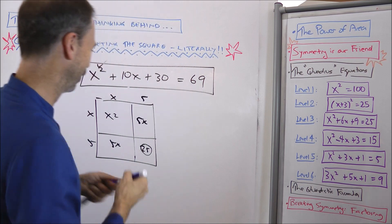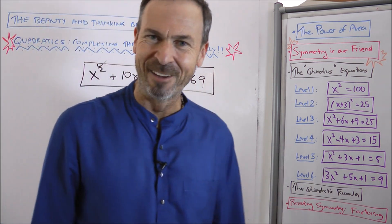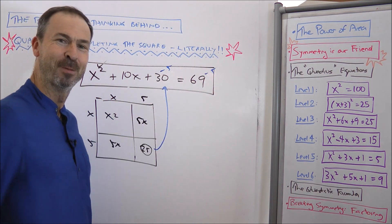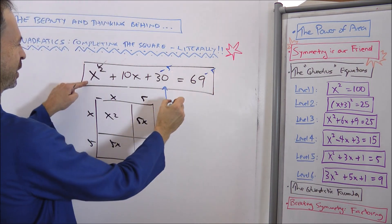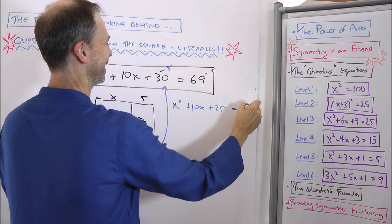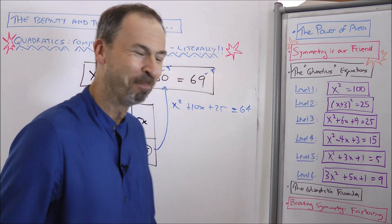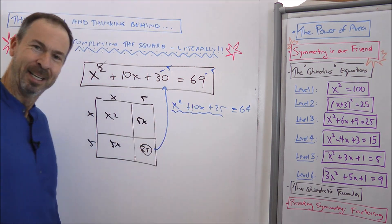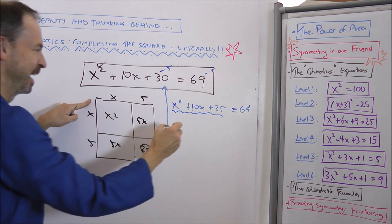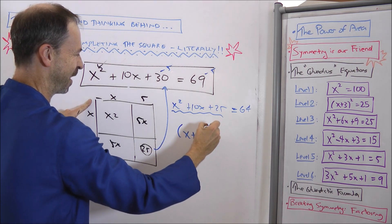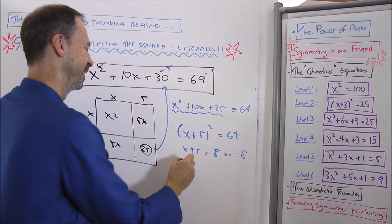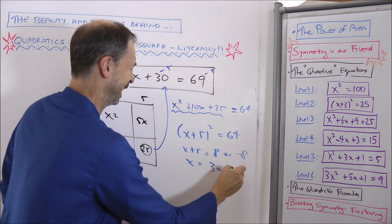We've got a mismatch. The question is 30, not 25. But I'm not phased. I'm going to subtract 5 from the left, which means I'm going to subtract 5 from the right, and rethink the equation as x squared plus 10x plus 25 — that's what I want — equals 64. All this stuff here, x squared plus 10x plus 25, is the square: x plus 5 times x plus 5. x plus 5 squared is 64, so x plus 5 must be 8 or negative 8, so x must be 3 or negative 11.